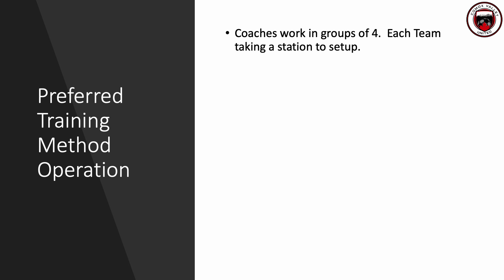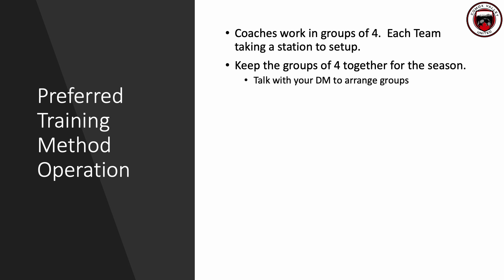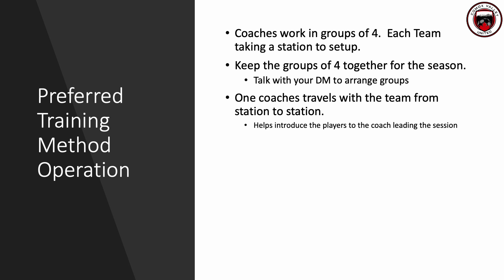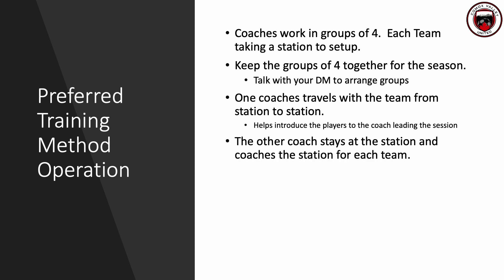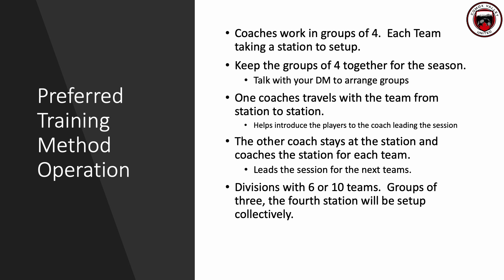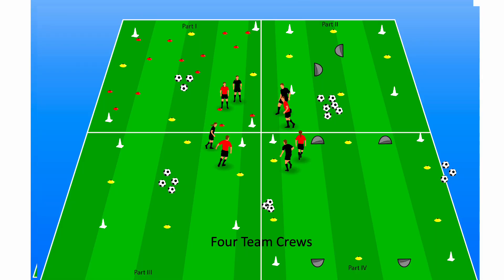On training nights, our divisions are typically broken up into teams of four. Those four teams can group up and work at one station, each team setting up a part. Those groups can work together for the season — talk to your division manager about group partnerships. One coach will travel the team from station to station and help introduce players to the coach leading that station; the other coach stays with the station and coaches it for the teams rotating in. It's important to put yourself in the middle, keep your kit there, and ask parents to stay on the outside so you can move freely among the rotation.